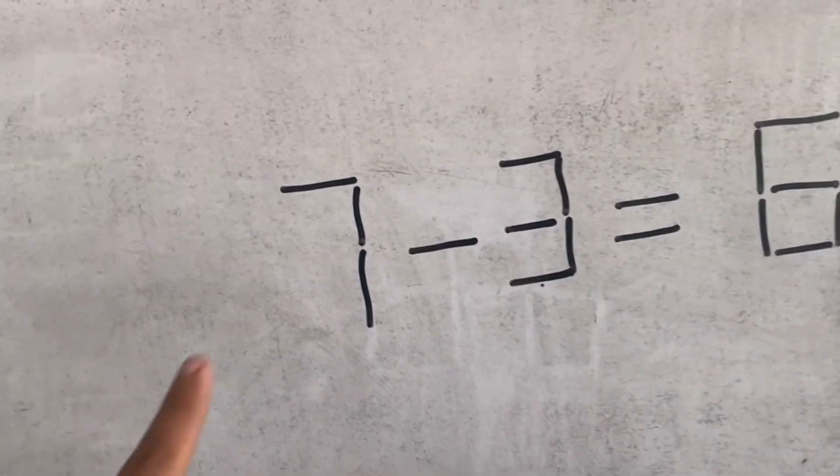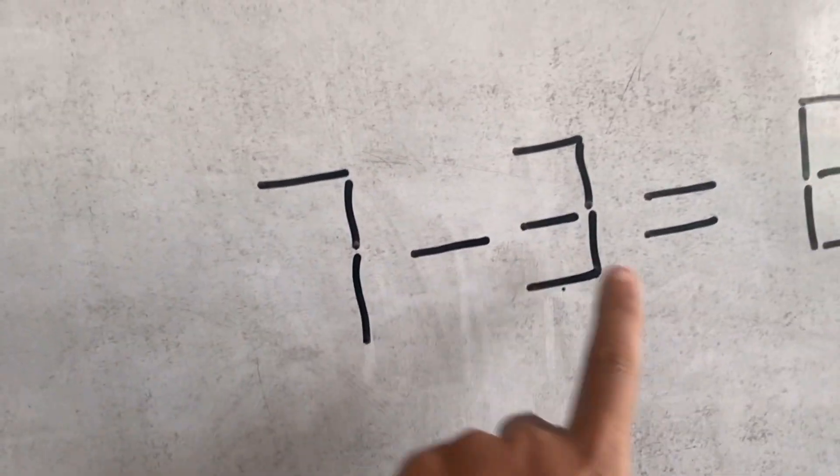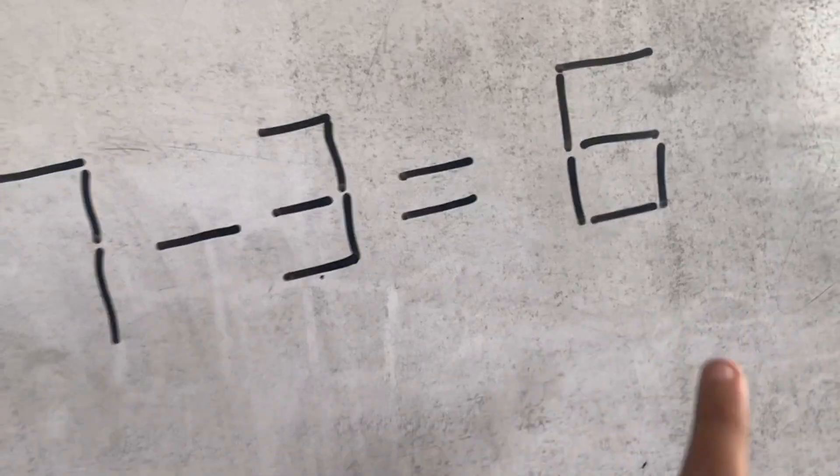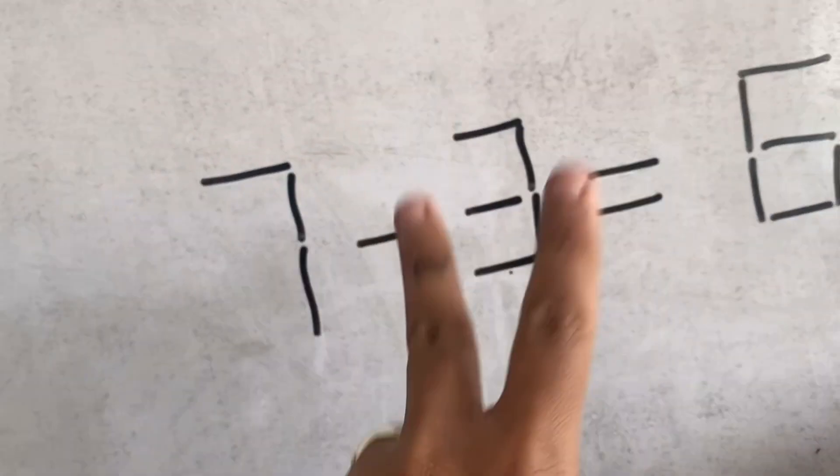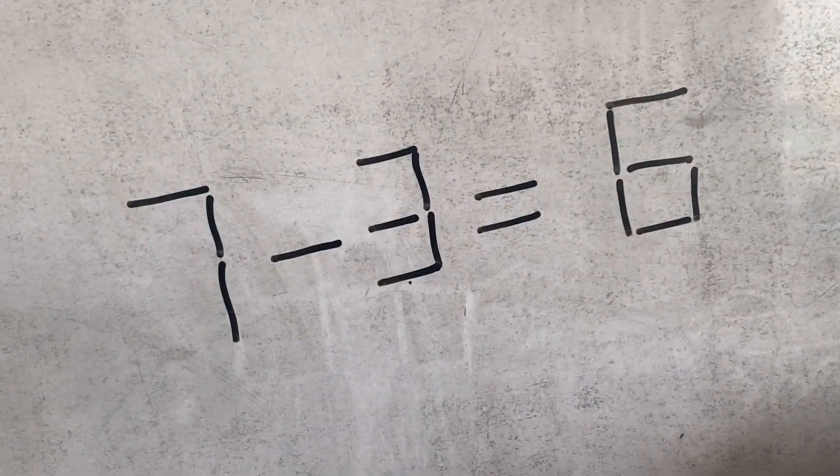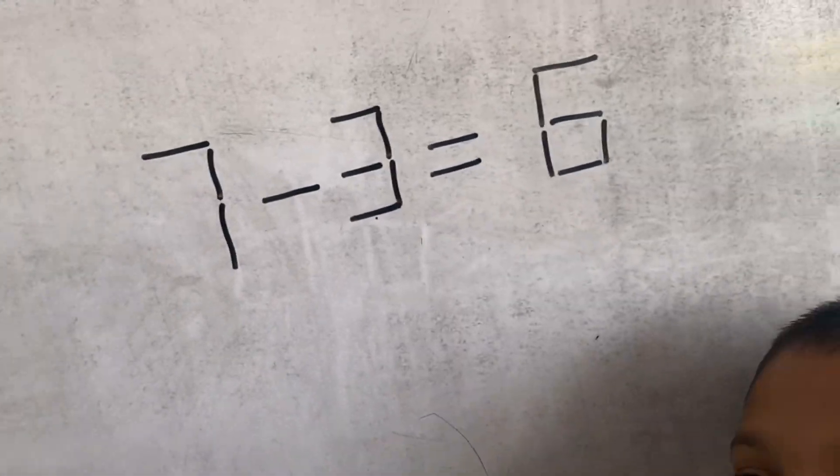Here we have the equation: 7 minus 3 is equal to 6. Here you can take any two sticks and you have to solve this equation. You have to make it.